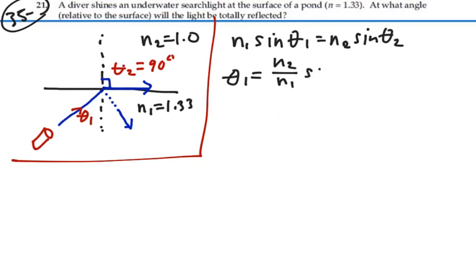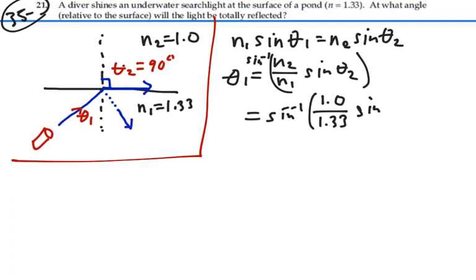Theta 1 equals the inverse sine of n2, which is the air at 1.0, divided by n1, the water at 1.33, times sine theta 2, which is 90 degrees.